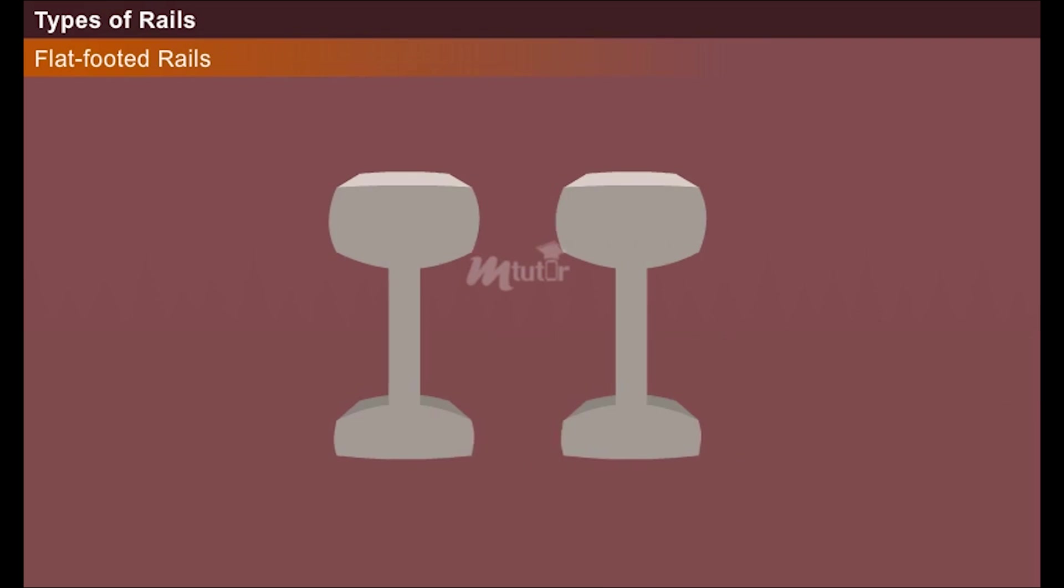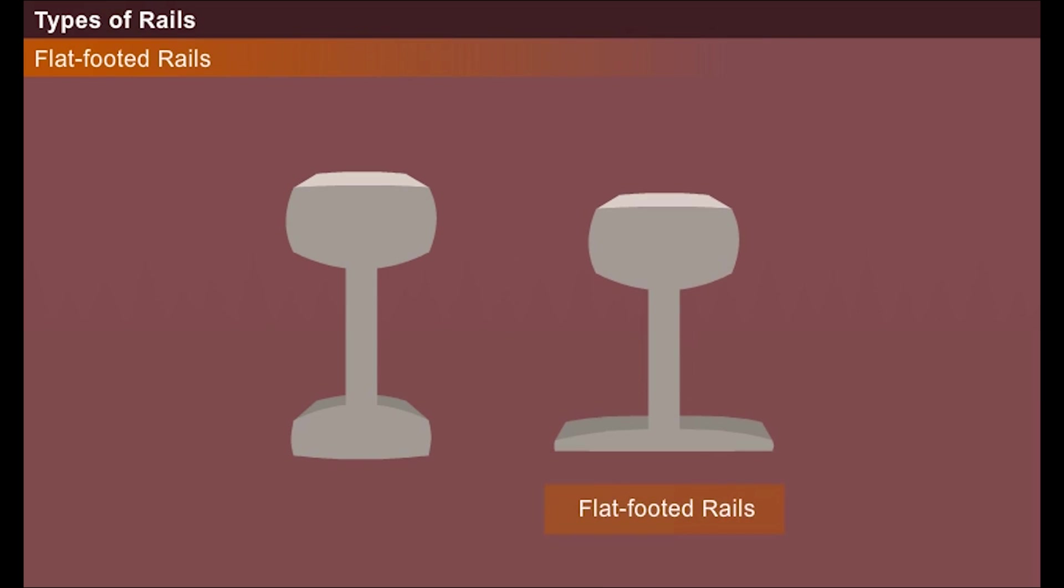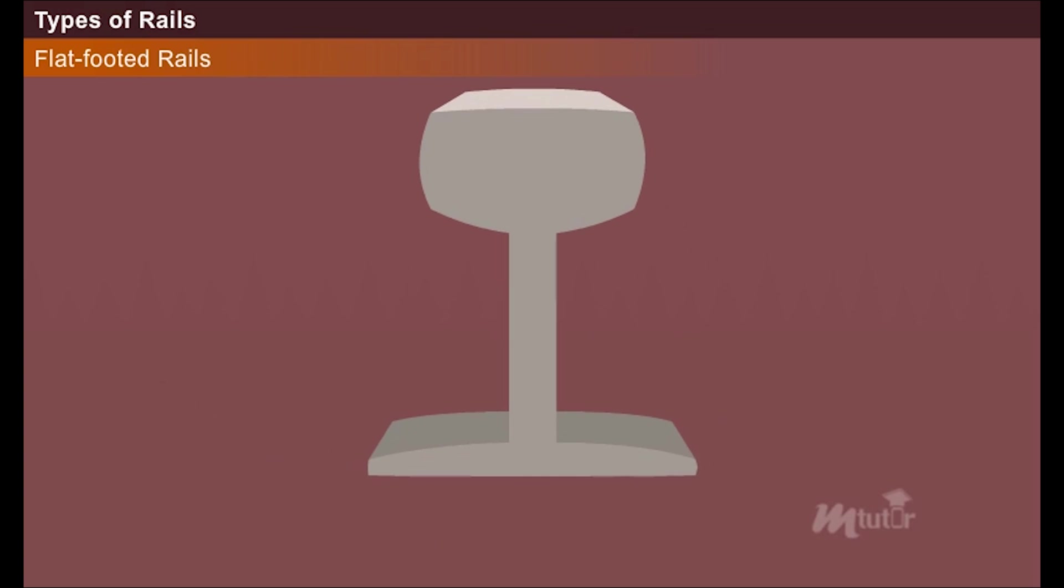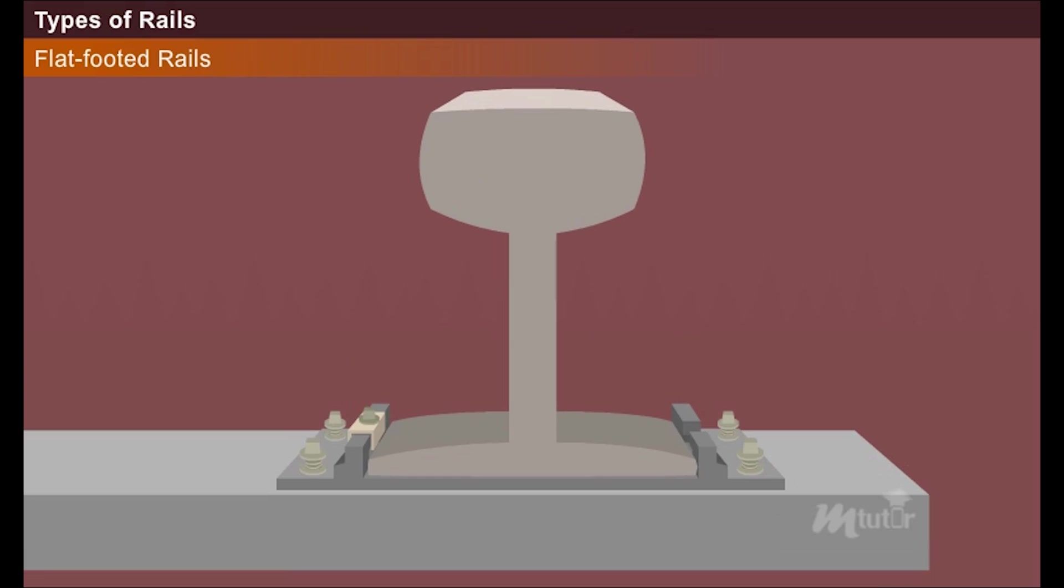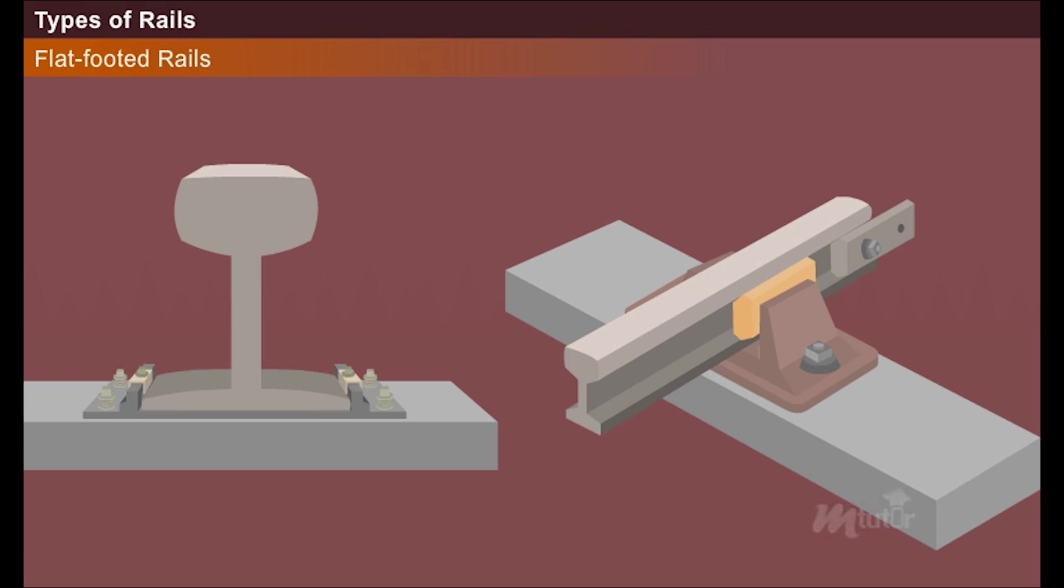The rail sections having their foot rolled to flat are called as flat-footed rails. Flat-footed rails are fixed to the sleepers using a bearing plate. Here no chairs are required to hold the rails in position. Thus they require less number of fastenings and are predominantly used nowadays.